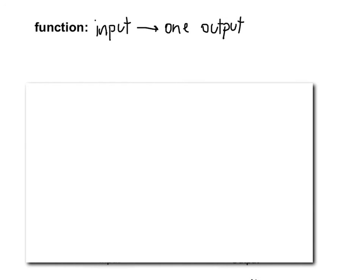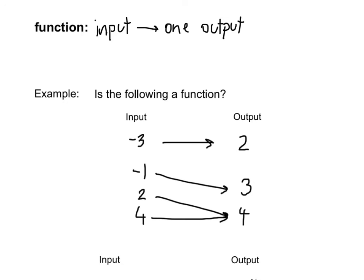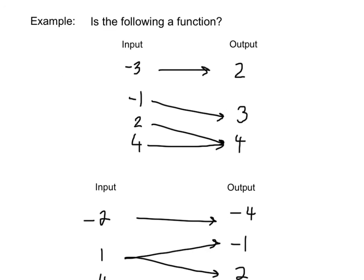So our next point is we are given this example and we are asked if the following is a function. So based on our definition of a function, we just went over, is the following a function. The answer is yes. Each input has exactly one output. Negative 3 and 2, negative 1 and 3, 2 and 4, and 4 and 4. Even though these both share 4, each has their own output, even if it's the same.